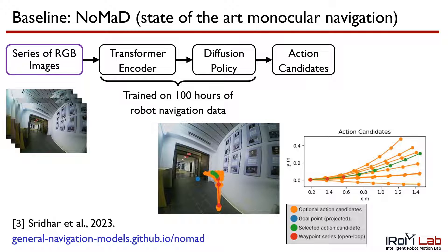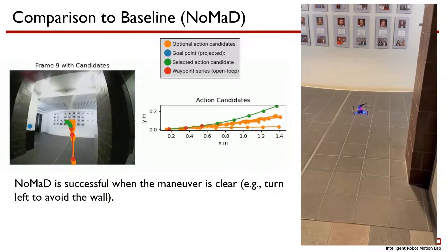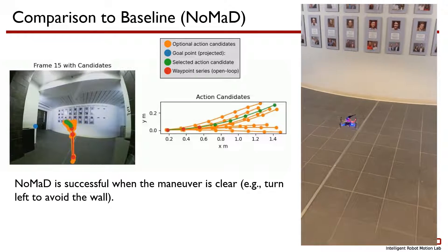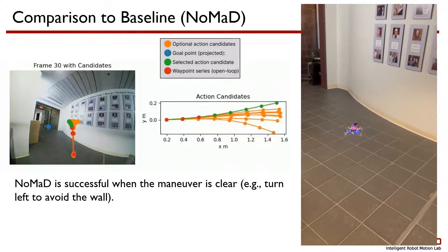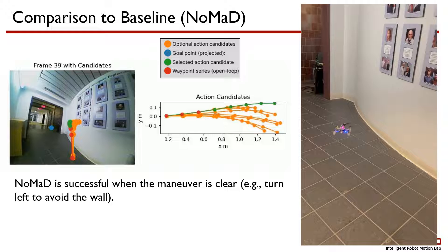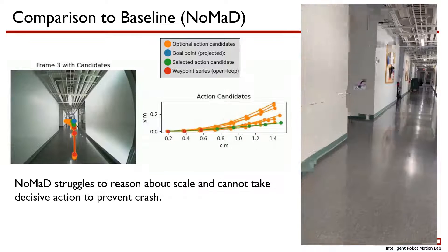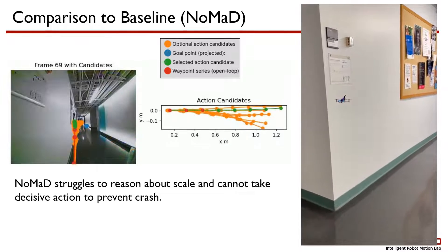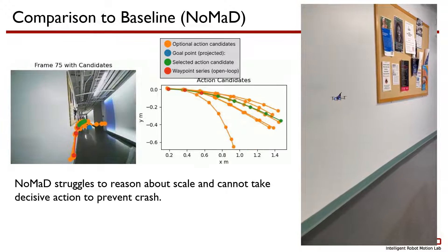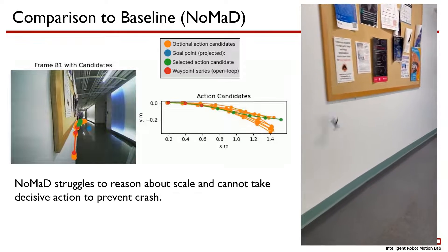The diffusion policy directly outputs action candidates as position trajectories. Since all candidates should be collision-free, we choose the action that makes the most progress towards the goal and execute the first three waypoints before replanning. We find that NOMAD is most effective when a clear maneuver is required, for example, turn left to avoid the wall. However, the action candidates are not very diverse and occasionally inexplicably suggest turning into the wall. In another example down a straight hallway, NOMAD struggles to reason about scale and cannot take decisive action to prevent a crash — all action candidates are very straight, which is not sufficiently evasive.